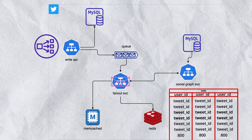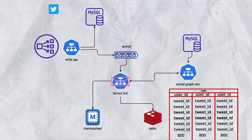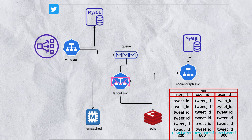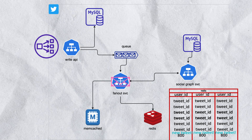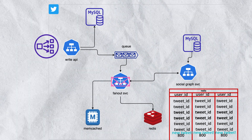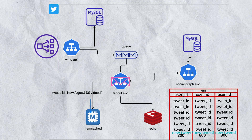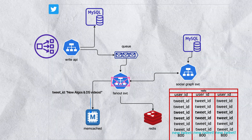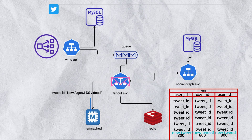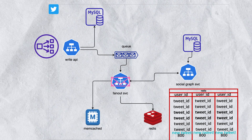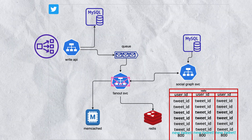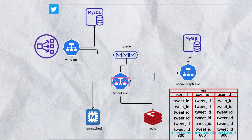The fanout service, with the list of users that follow the person that sent the tweet, is going to append the tweet to the home timeline of every user from that list. The fanout service is also going to be responsible for storing the tweet body in memcached. Memcached is going to have a key-value pair structure where the key is the tweet ID and the value is the body of the tweet. This is the flow for a user sending a tweet that we want to build.